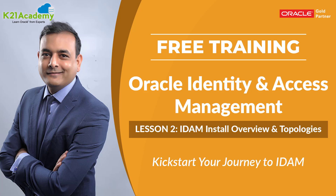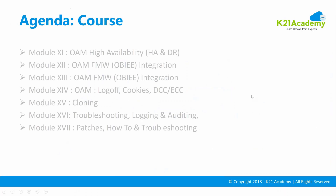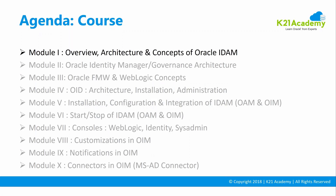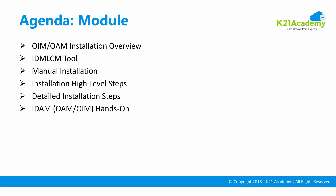Before we proceed, let's look at the topics we are going to cover. We are first going to look at Oracle Identity Manager and Access Manager installation overview. Then we are going to look at IDM-LCM, which is the Identity Management Lifecycle Management tool. Then we are going to look at manual installation. There are two ways to install and configure Identity and Access Management: one is the IDM-LCM tool, and the second is manual installation.